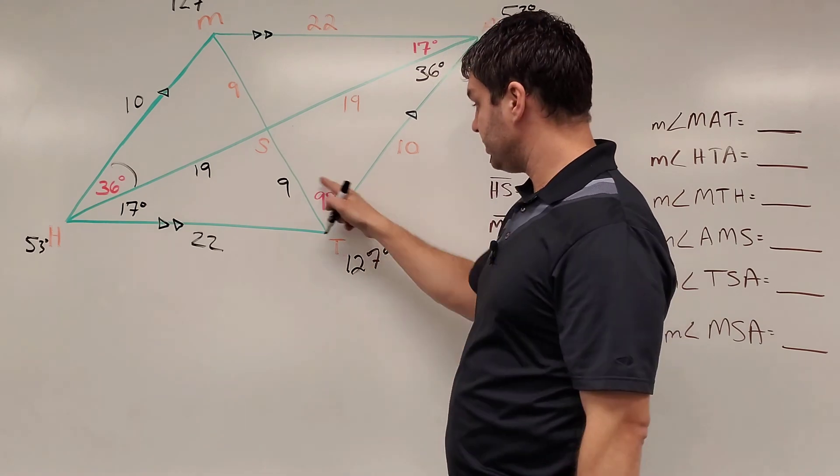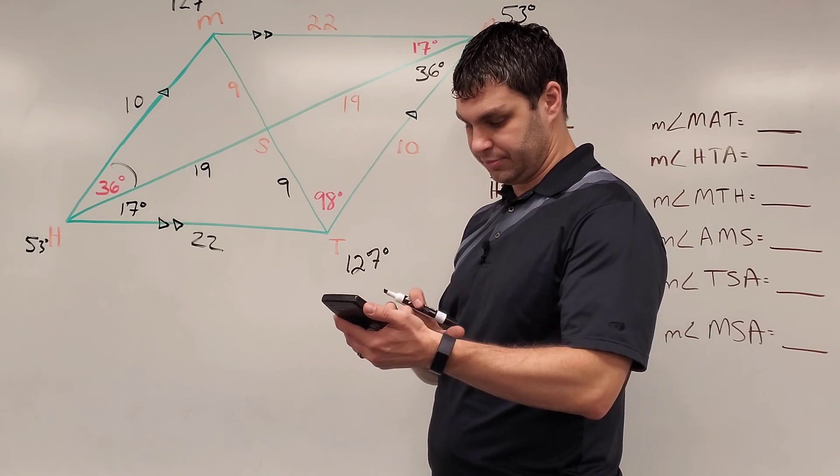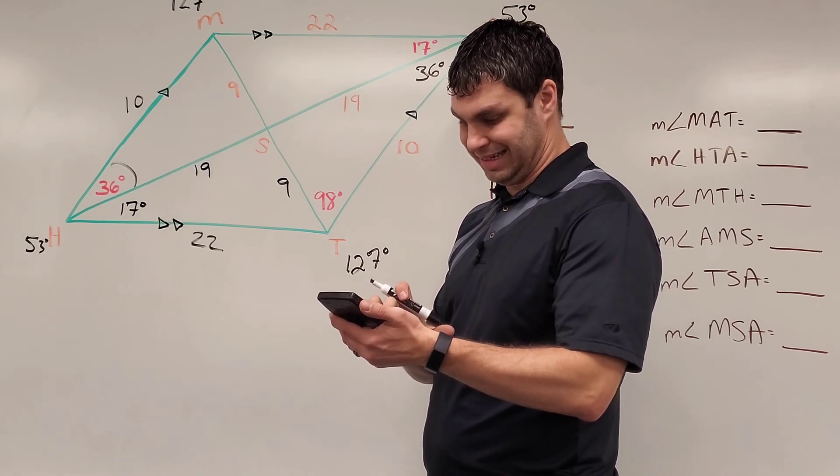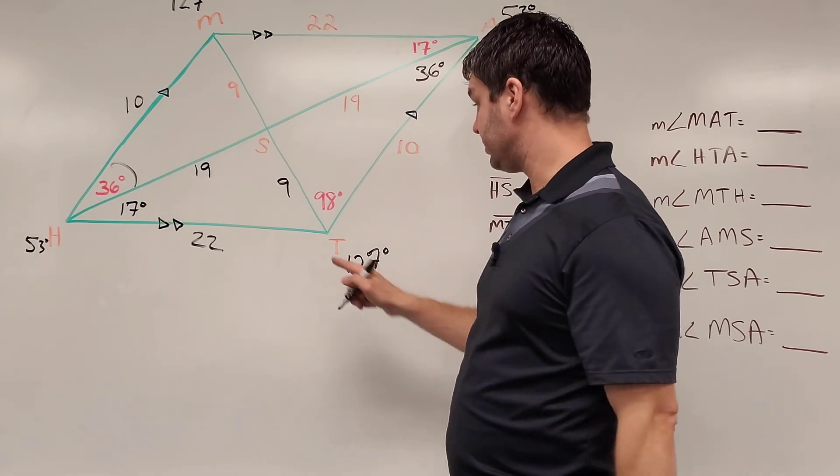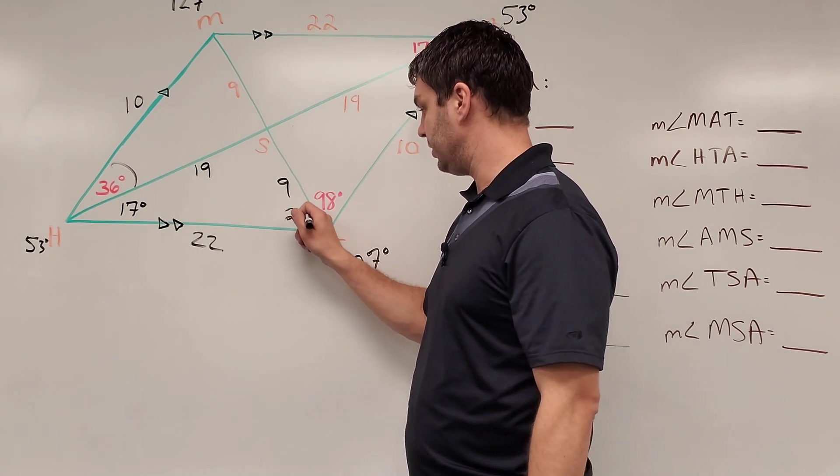Now, it's helpful because we know this is 98 degrees. So again, if I take that 127 and subtract 98, 127 minus 98, that gives me 29 degrees left over for this leftover spot down here, 29 degrees.